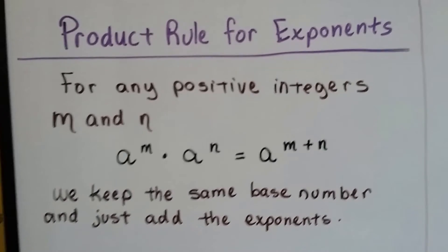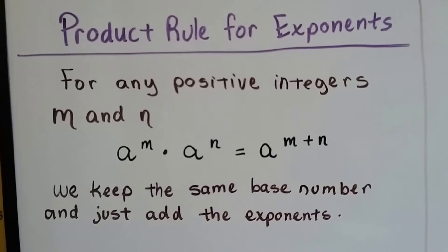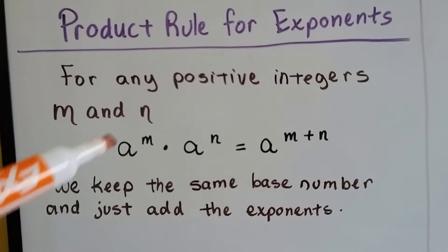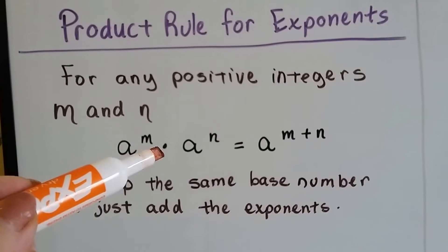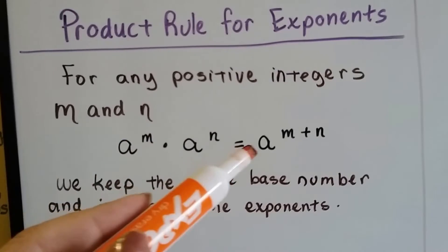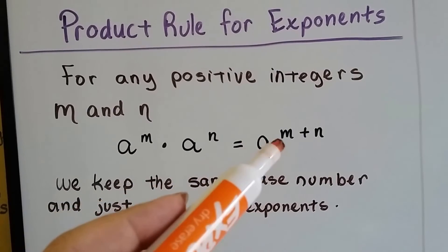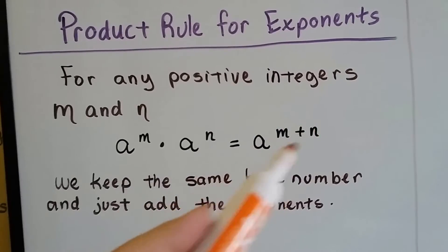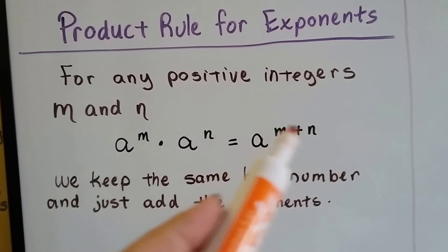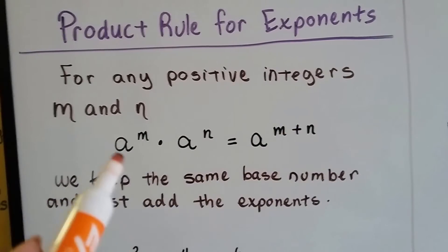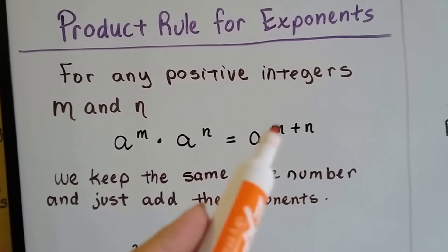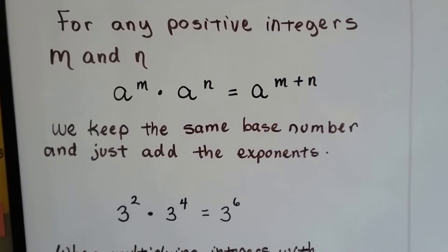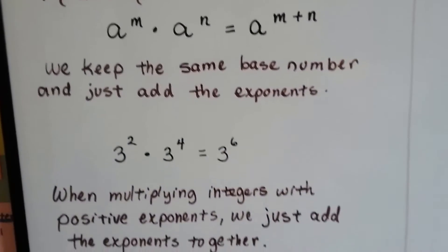The product rule for exponents says: for any positive integers m and n, a to the m power times a to the n power is going to equal a to the m plus n. The exponents get added together. So if the bases are the same, the powers get added together — we keep the same base number and just add the exponents.